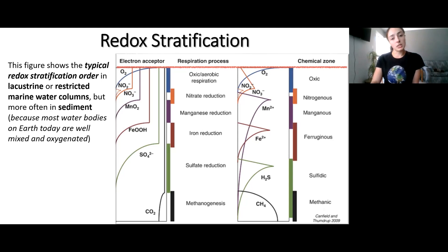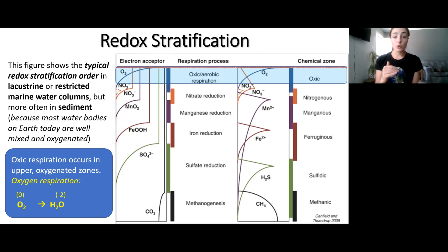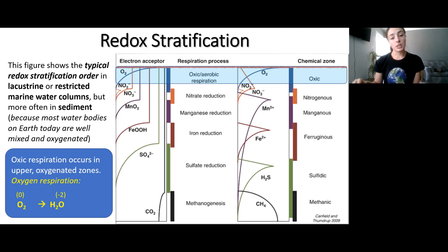I'm going to walk through this step by step. First, you'll have an oxic zone at the surface — whether you're talking about stratification of water columns or sediment — where oxygen respiration occurs. This is when oxygen is reduced from a zero oxidation state in molecular oxygen form to water, in which it has a negative two oxidation state, which is most often the case for oxygen in compounds.